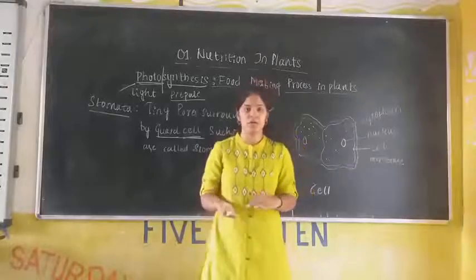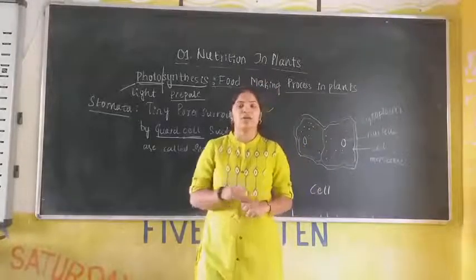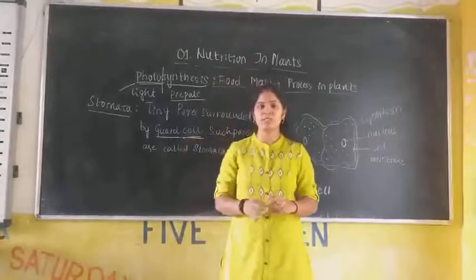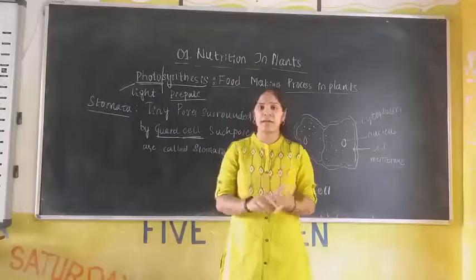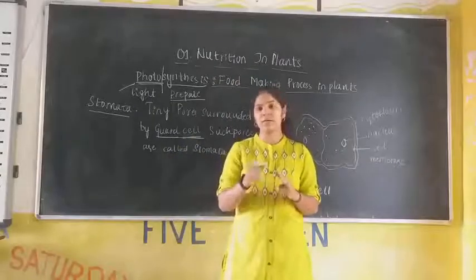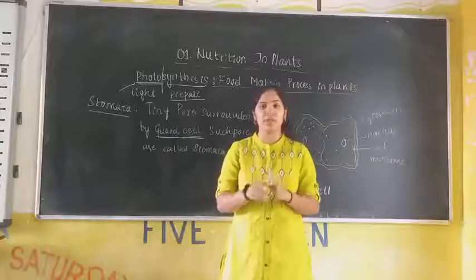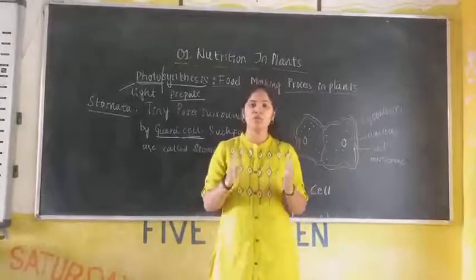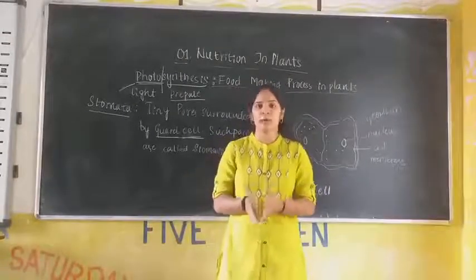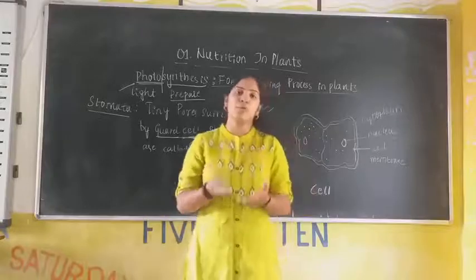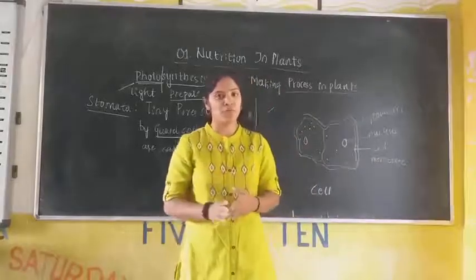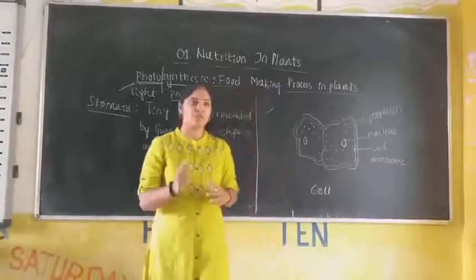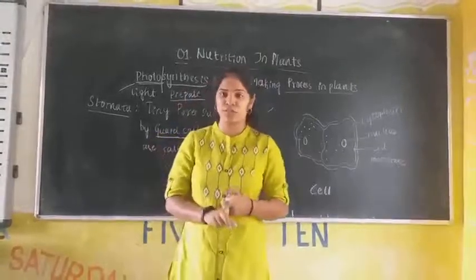The main components of photosynthesis are carbon dioxide, water, minerals, and the most important — light. Using all these components, the plant produces or prepares its own food in the presence of sunlight. This process is called photosynthesis.